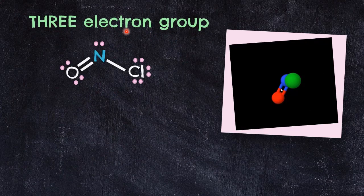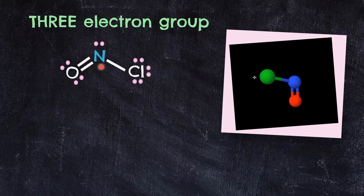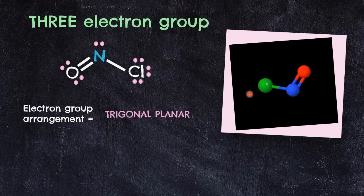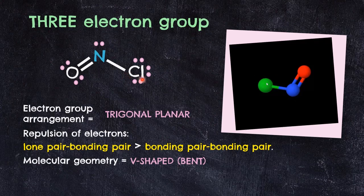Still in the 3 electron group category, but now with one bonding pair replaced by a lone pair: in NOCl, nitrogen is the central atom. There is a double bond between nitrogen and oxygen, a single bond between nitrogen and chlorine, and a lone pair on nitrogen. Since nitrogen has 3 electron groups, the arrangement is still trigonal planar. However, the 3D shape shows only the NO and NCl bonds. The lone pair–bonding pair repulsion pushes the atoms closer, forming a V-shaped or bent geometry with a bond angle of less than 120°.